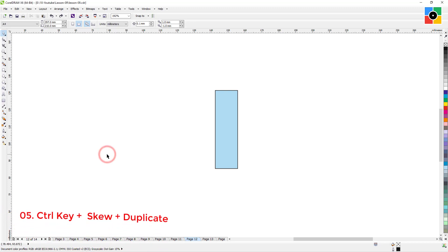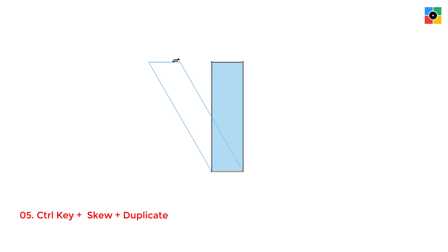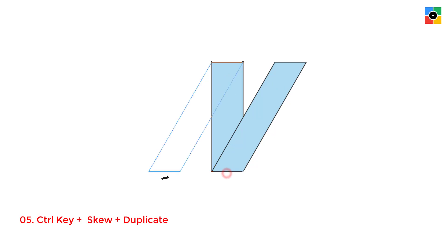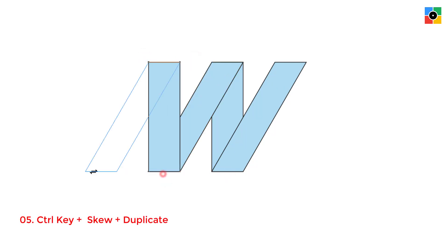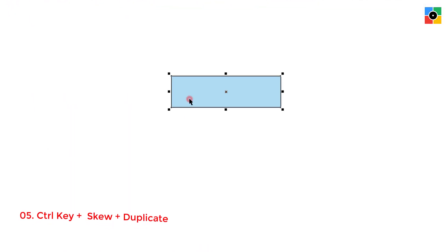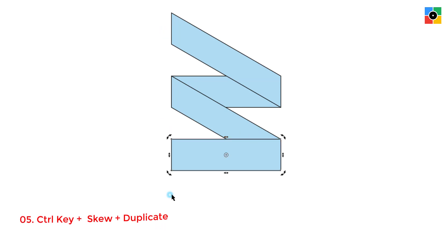To skew and duplicate an object in the default 15-degree angle: click twice on the object, press and hold the Ctrl key, click and hold the top center handle, move the cursor left or right horizontally, click and hold down the right mouse button, leave the left mouse button first, then leave the right mouse button, and finally leave the Ctrl key. This creates a duplicate skewed object in default 15-degree steps. You can create multiple horizontal duplicate skew objects in 15-degree steps. Similarly, you can create vertical skew duplicate objects in 15-degree steps.